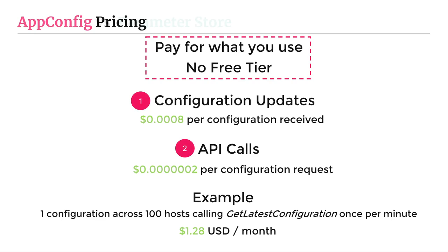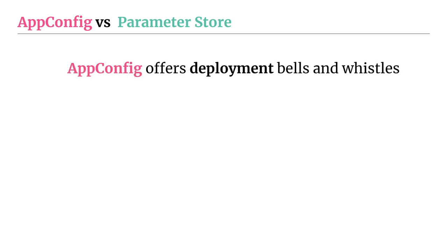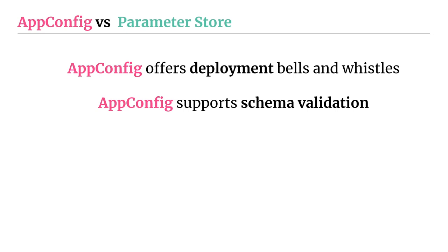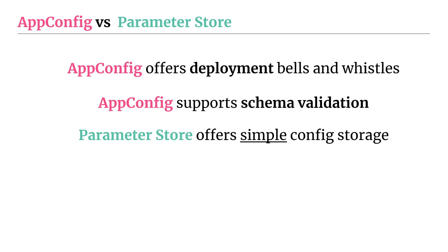Briefly comparing AppConfig to AWS Parameter Store: AppConfig offers deployment bells and whistles — monitoring, auto rollback, schema validation — preventing syntax errors from blowing up your app. Parameter Store is a much simpler solution offering basic key-value pair config storage without all the deployment and validation features, using a flat rate per parameter. If you have simple key-value retrieval requirements, go with Parameter Store. If you want all the bells and whistles, go with AppConfig.